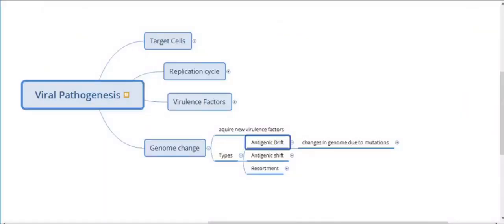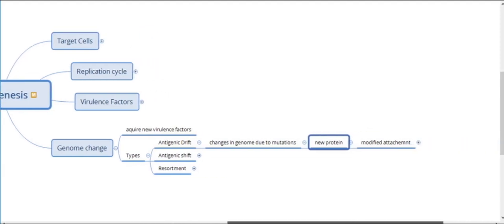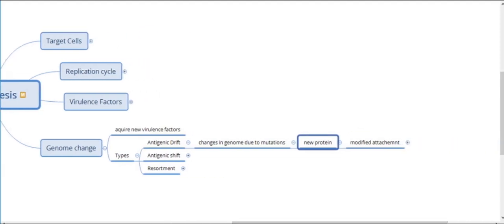Antigenic drift occurs in RNA viruses: there are small mutations every time the virus replicates, and point mutations sometimes cause minor changes in surface proteins. For example, in influenza virus, antigenic drift may produce a newer type of hemagglutinin or neuraminidase, resulting in a change in the original attachment site. Thus the virus may get a newer target cell — that is antigenic drift.